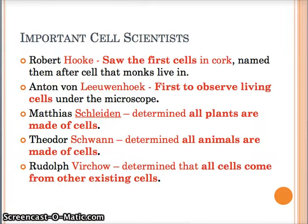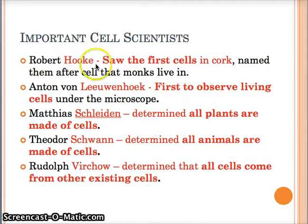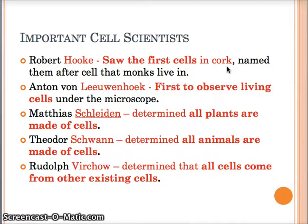Alright guys, so important cell scientists. There are 5 of them. They are all listed on your test. Remember, if it's red, copy it word for word. If it's black, you don't have to do anything with it. So the first one, Robert Hooke - he saw the first cells and he saw those in cork, like a cork board. Those were dead cells, so he didn't really get a whole lot out of it, but he did see them and he was the guy that named them.